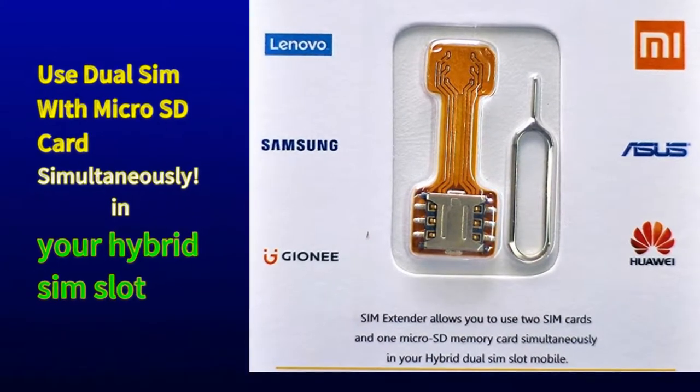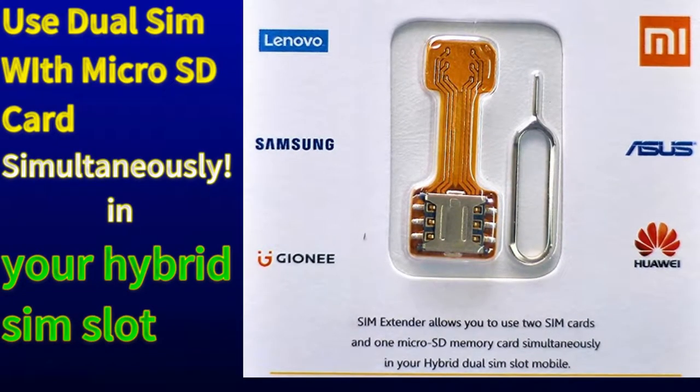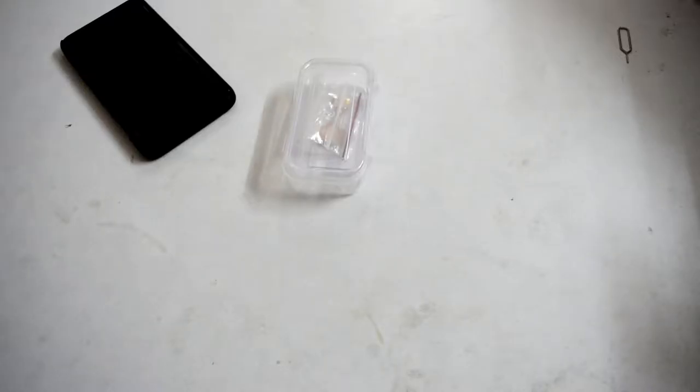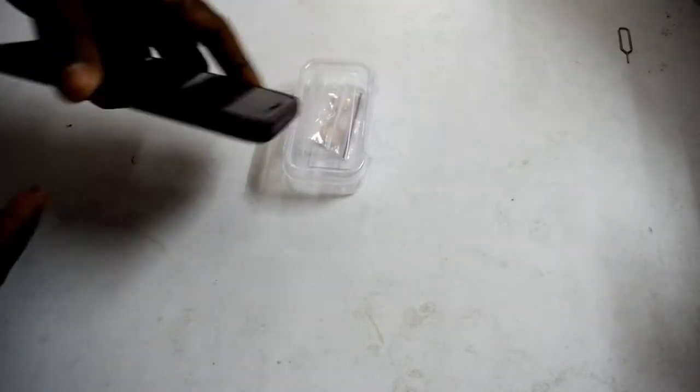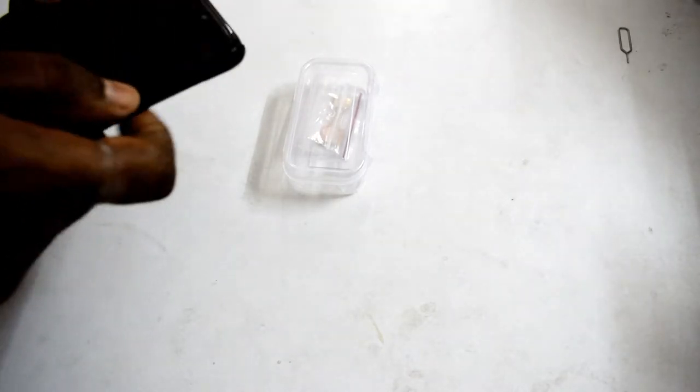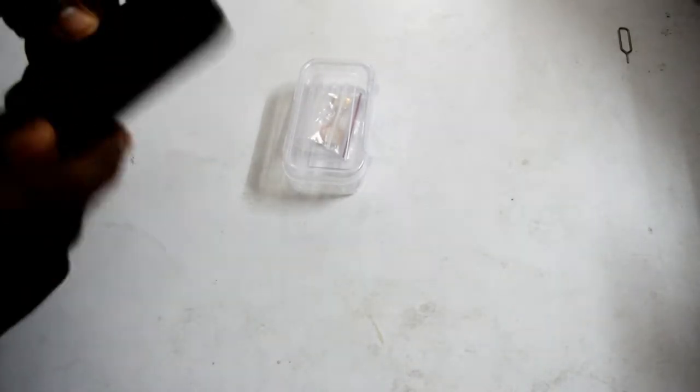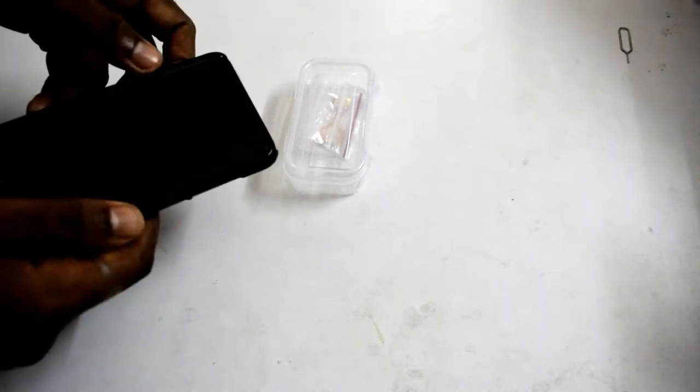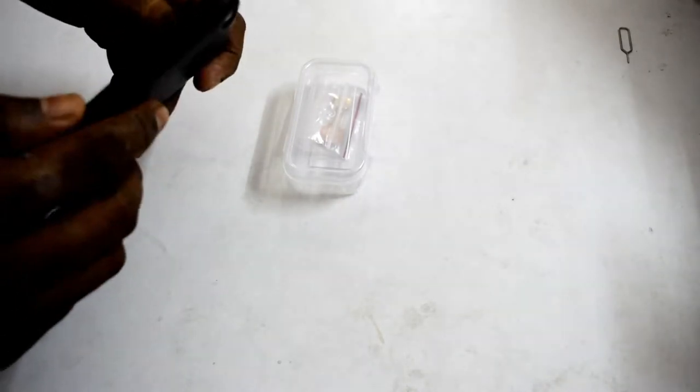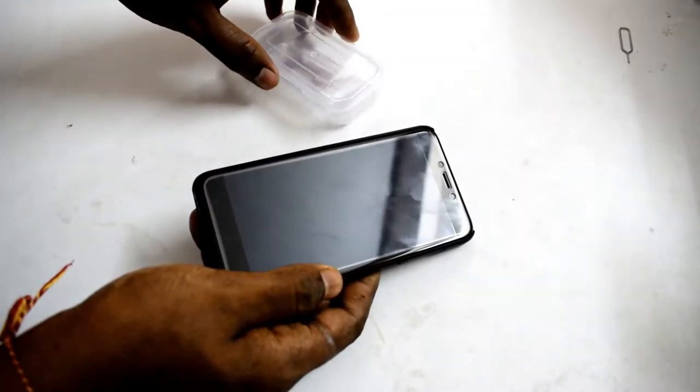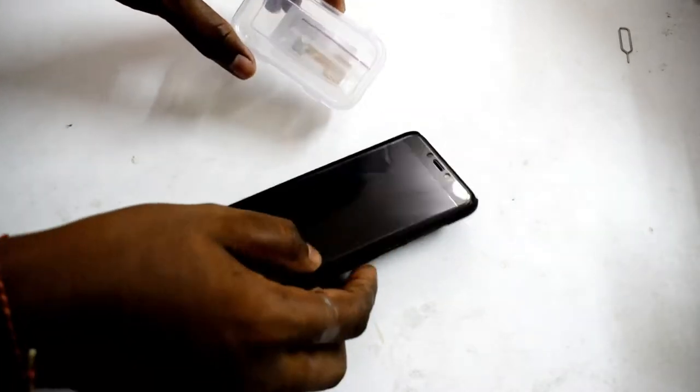Hello viewers, hope you're fine. In this video I'll show you how you can use dual SIM along with a micro SD card simultaneously in your hybrid SIM slot phone. Normally in a hybrid SIM slot phone you can use either two SIM cards or a single SIM card and a SD card, but with the help of a hybrid SIM adapter you can use two SIM cards with a SD card simultaneously.